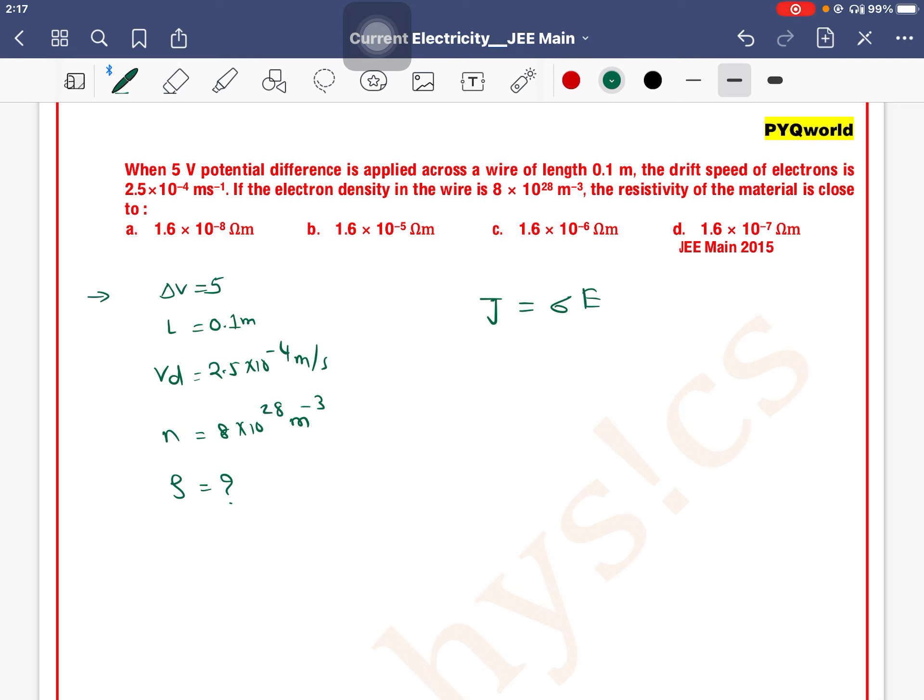The formula for j is equal to n e Vd. Sigma is 1 by rho, and E can be written as V by d, that is the potential gradient formula.